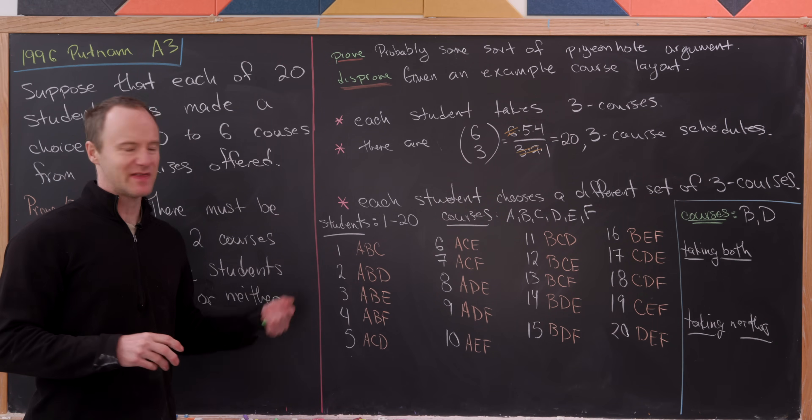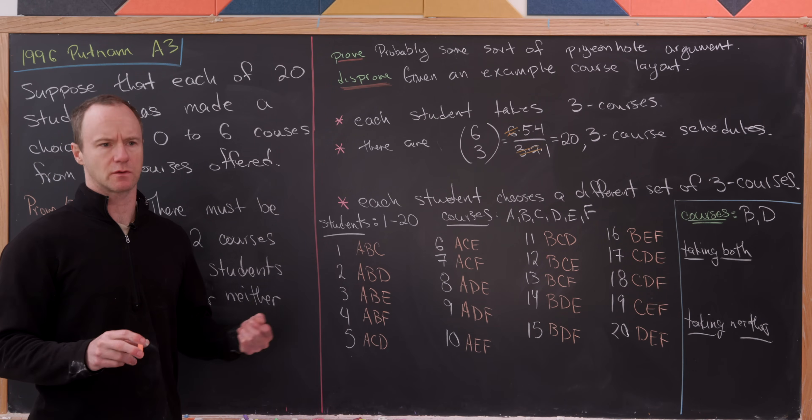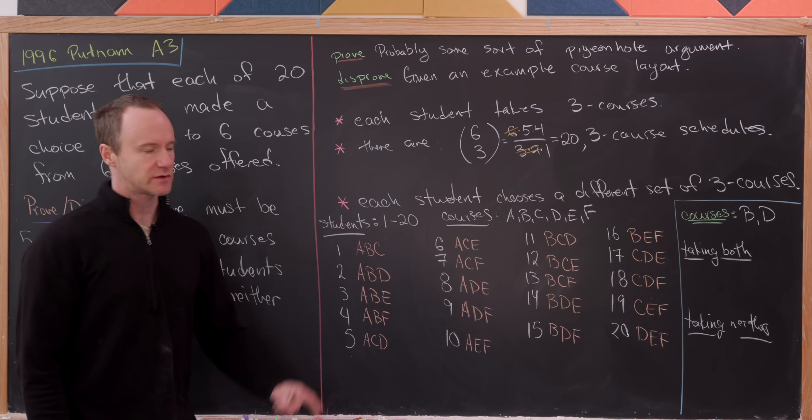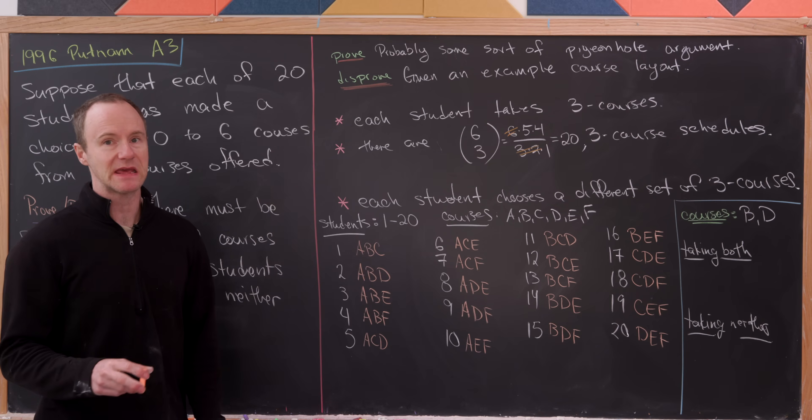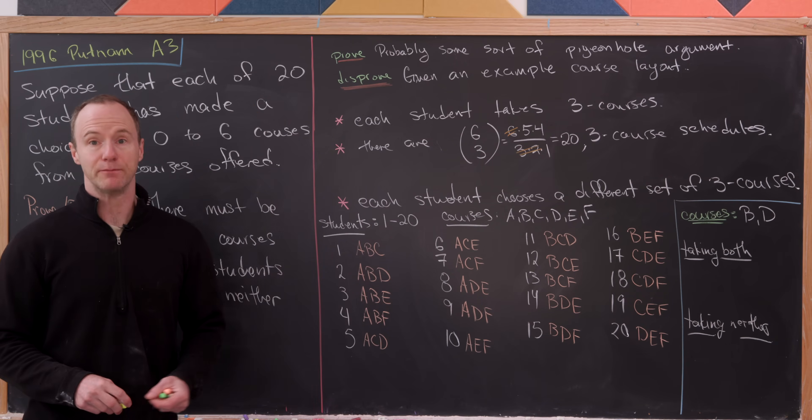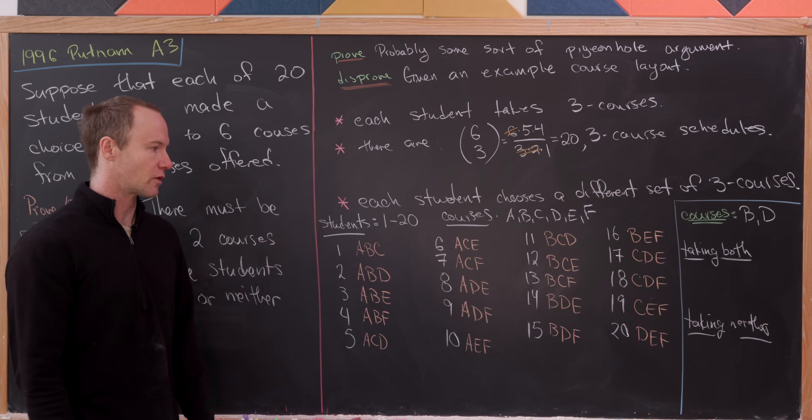So observe, I did it in a systematic way to make sure I didn't list two twice or that I would list all of them. So now let's do an example. So let's pick a pair of courses. At random, let's pick B and D. And then after picking B and D, let's find all of the students that are taking both courses B and D and the students taking neither courses B nor D.